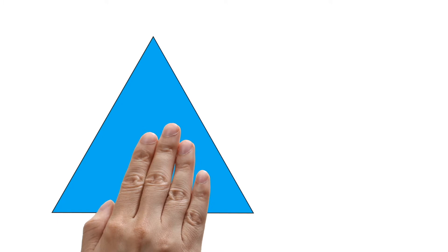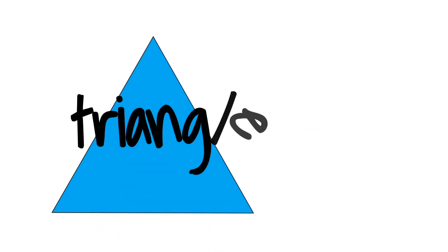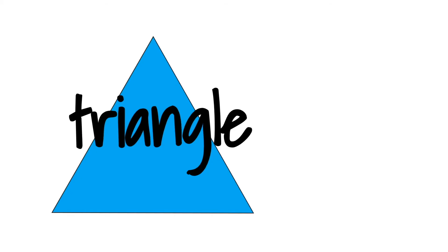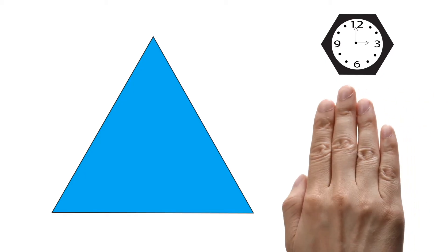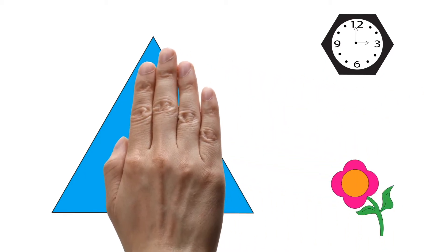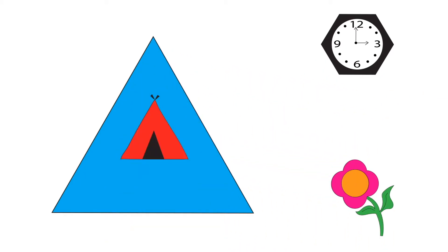This is a triangle. Can you see an object that is shaped like a triangle? A tent is shaped like a triangle.